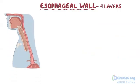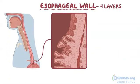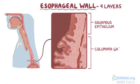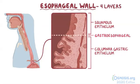Finally, at the lower esophageal sphincter, the squamous epithelium joins the columnar gastric epithelium to form the gastroesophageal junction.